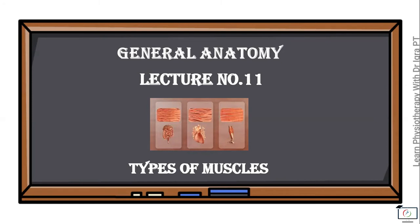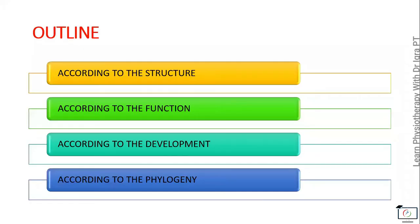Hello and welcome back to my general anatomy lecture series, lecture number 11, in which we will study about the types of muscles. There are mainly three types of muscles, but they can be classified on different bases: according to their structure, according to their function, according to their development, and the phylogeny.